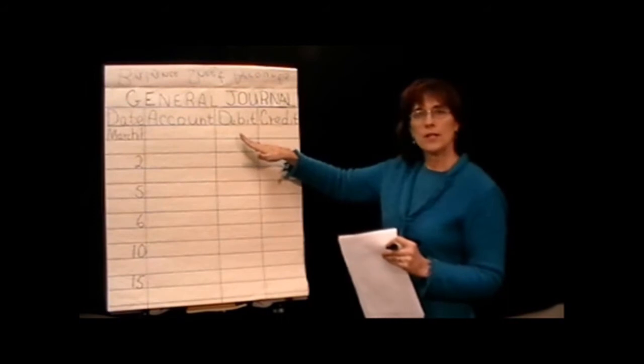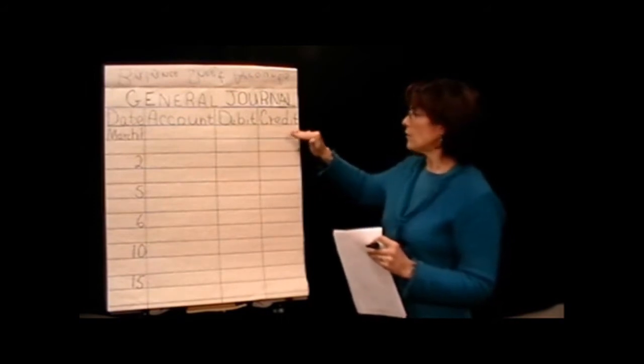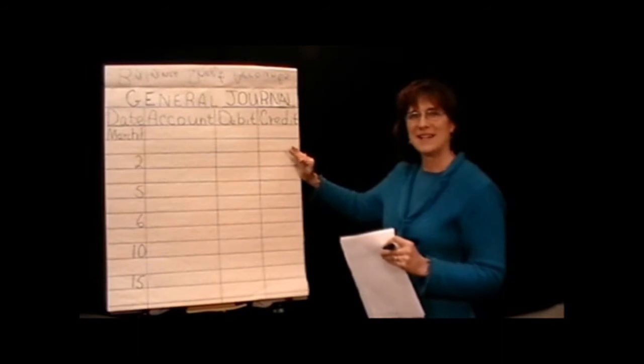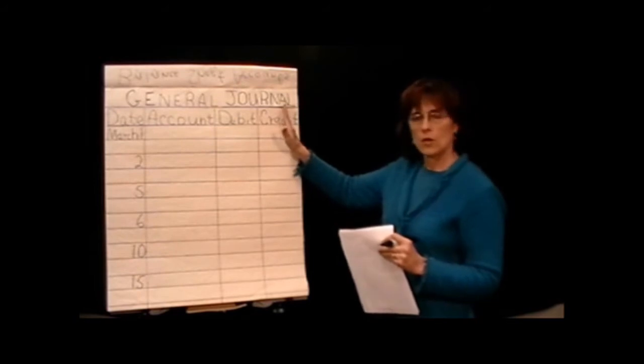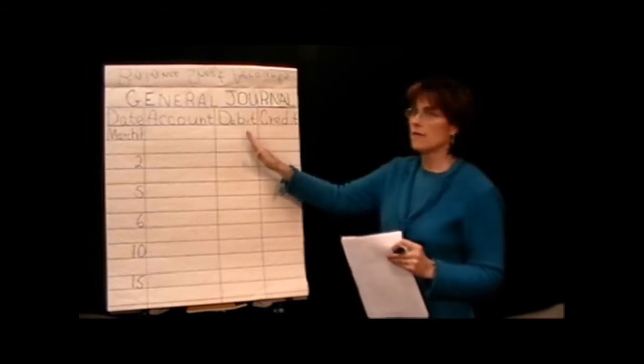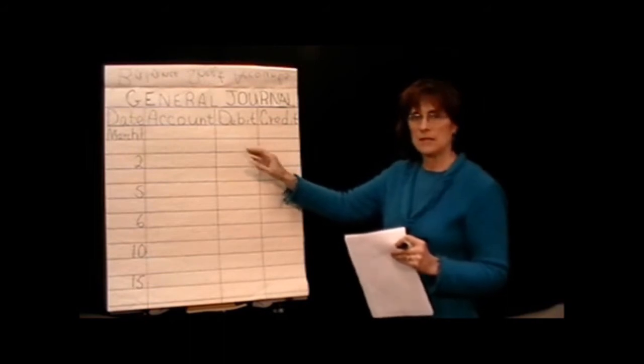And then we have a column for debit, and we have a column for credit. Notice the far right column is the credit side. If you remember earlier, I told you that the credit is the right-hand side, so the credit on our general journal is all the way to the right, and to the left of it, we find the debit side.